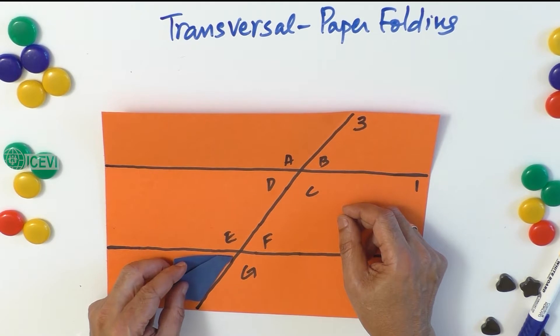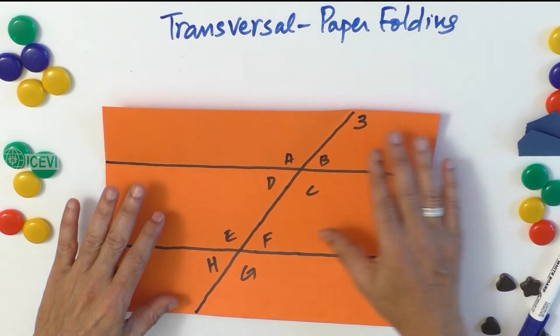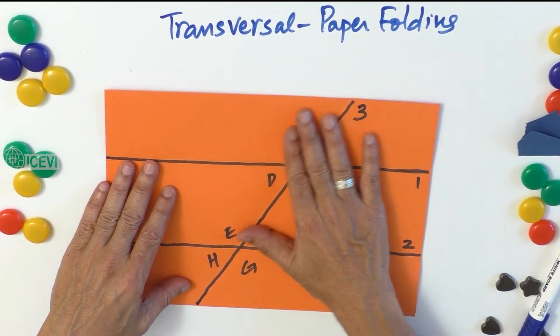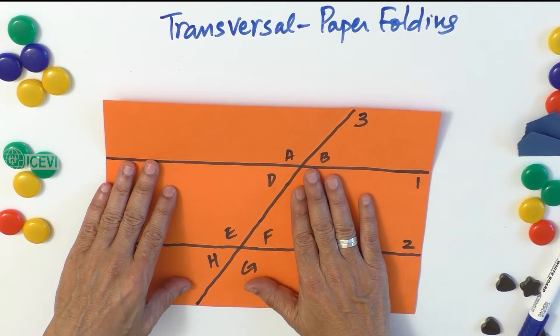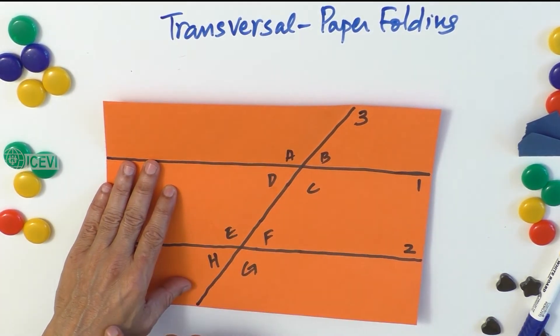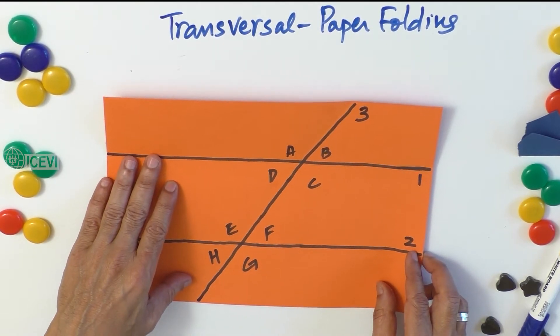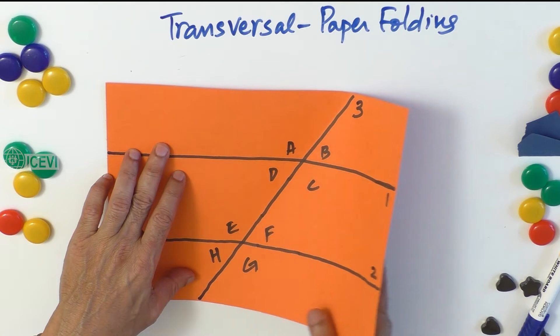So similarly, you can use the different paper strips to define the different concepts of angles and how they are similar to each other. Now if you just want to form the perpendicular transversal.